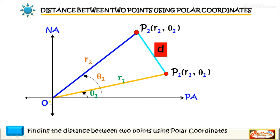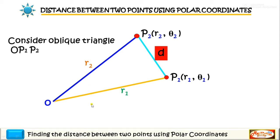If we observe, points O, P1, and P2 form an oblique triangle with the given sides as r1 and r2 and the included angle. So isolating the oblique triangle, we have triangle O-P1-P2 with the included angle as theta2 minus theta1.